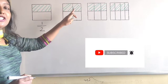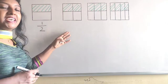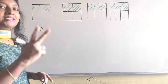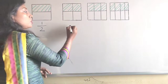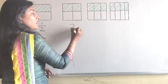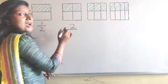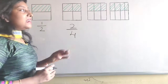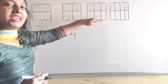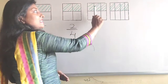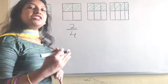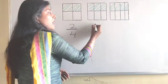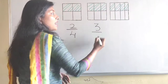Next, let us see the shaded region of the second square. If you observe here, 2 parts are shaded. So the total parts are 4, giving us 2 by 4. Next, let us see the fraction of the next square. 3 parts are shaded in green. So I am taking 3 by